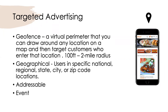Geofencing is a virtual perimeter you draw around any location — from 100 feet to two miles. Geographical targeting is broader, covering a zip code, city, or region. You can do addressable targeted advertising by uploading addresses — if you ran a direct mail campaign and want to pair it with geofencing, upload those addresses and send a digital ad to the people who received your direct mail piece.